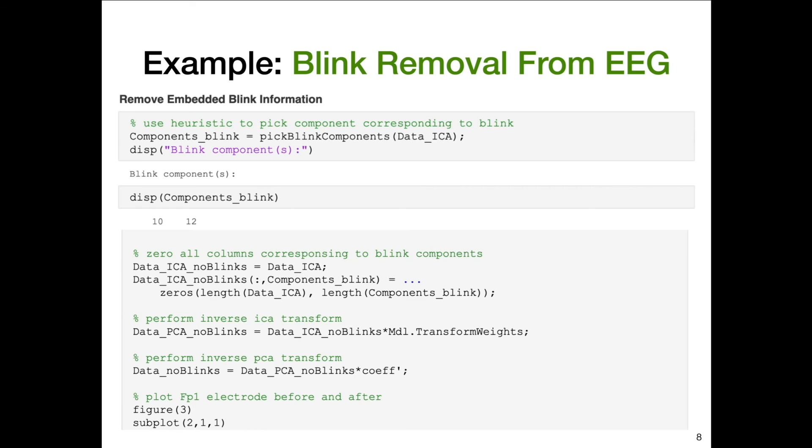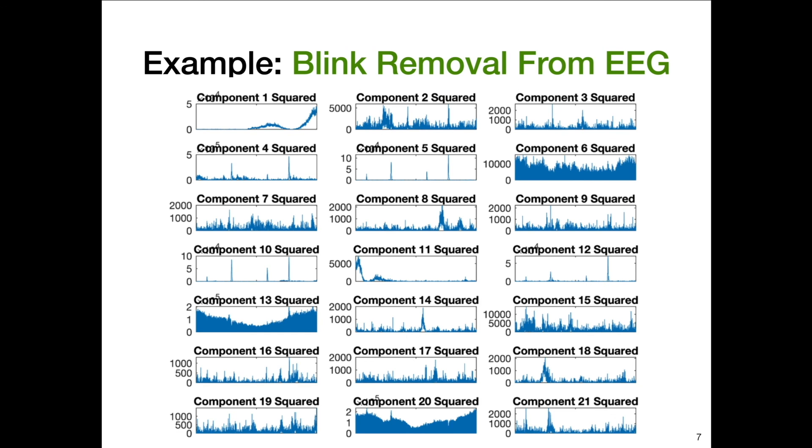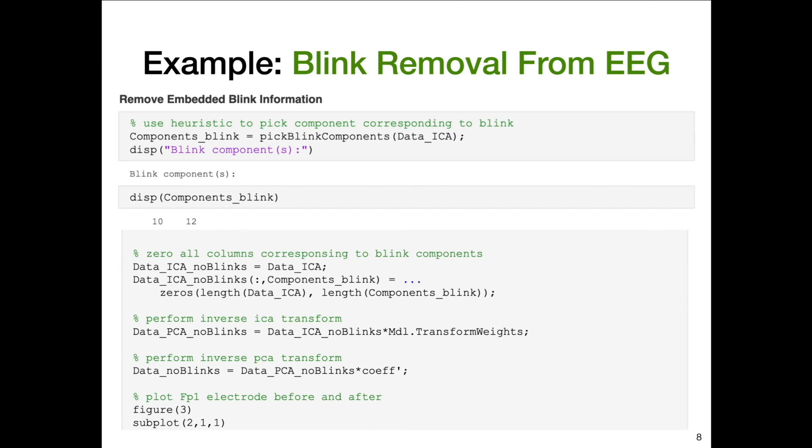I just used a rough heuristic. Basically, I picked out the independent components which had four prominent peaks. This isn't a robust way to do it. I was doing something fast and wanted it to be repeatable. It picked out independent components 10 and 12 to correspond to the blinks. So 10 and 12, I'll buy that. Maybe 5 should have been included, but we'll see how it turns out.